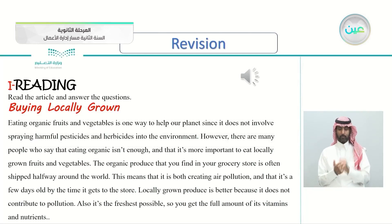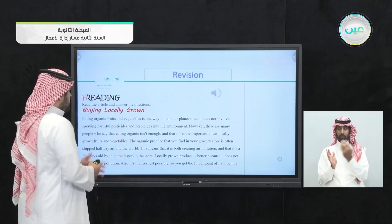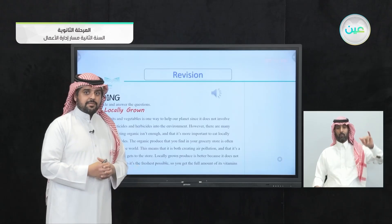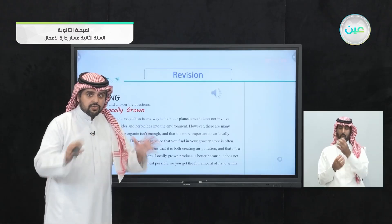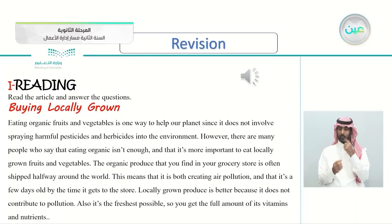The next exercise, Exercise I, is reading. Read the article and answer the questions. We have a three-part article. The first part is 'Buying Locally Grown' — meaning vegetables that are grown in your local area. Let's listen to this article.